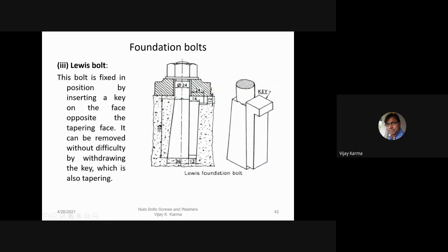The lewis bolt is fixed in position by inserting a key on the face opposite to the tapering face. It contains a tapering face and a concrete head.